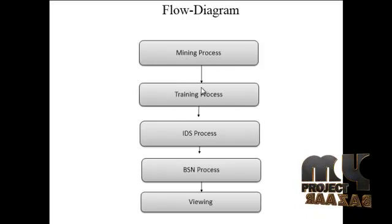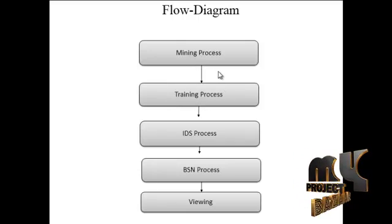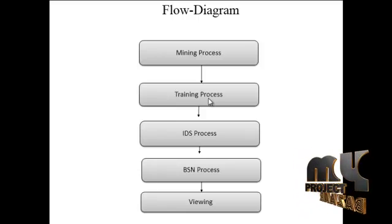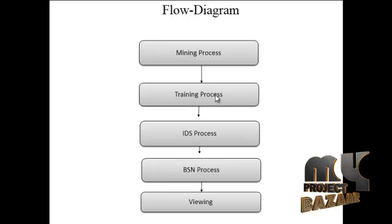The Training Process handles a large amount of data from the KDD dataset using pre-processing. The pre-processing step removes all irrelevant and invalid information, filtering it out. After training is complete, all unclean and misused information is displayed, and the cleaned data is then passed to the IDS process.